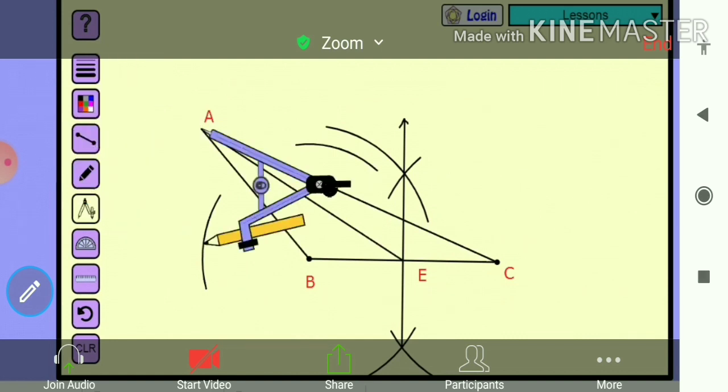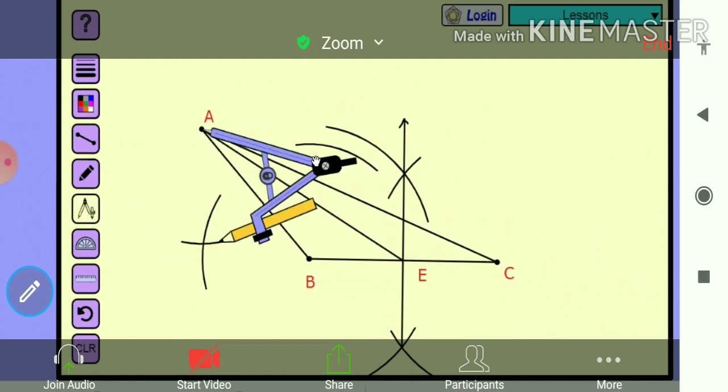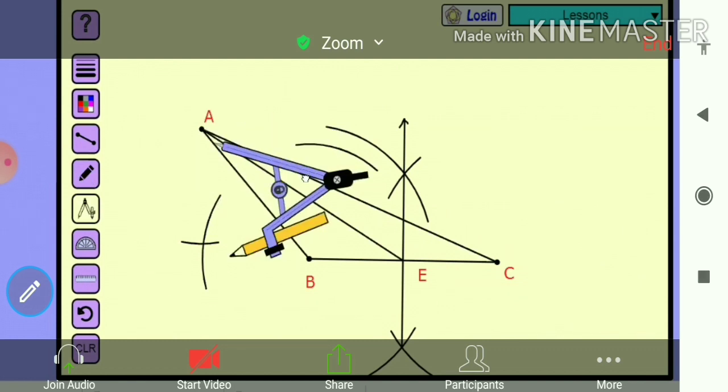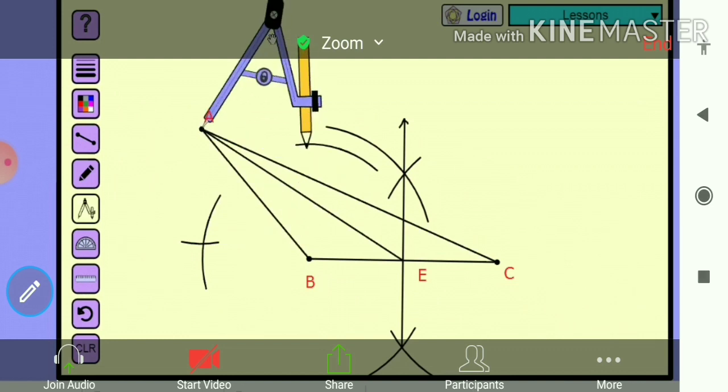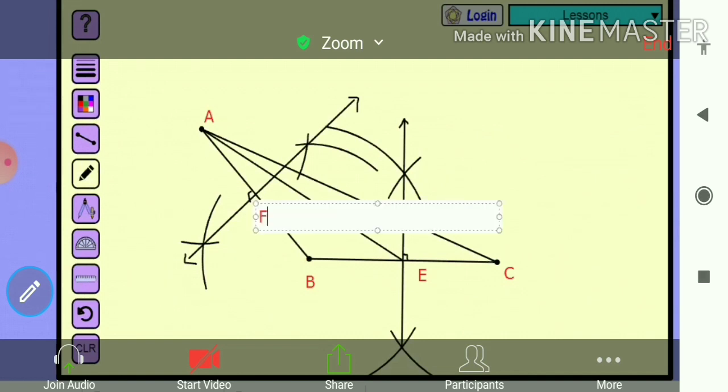Similarly, now again draw the straight line from this. Now we'll draw two arrows and here the symbol of 90 degree. Here also we will give the symbol of 90 degree. Now we'll give a name here, F point. And now CF is another median.